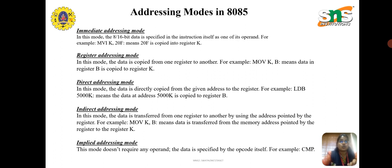In relative addressing mode, the operand is a memory location specified by the contents of the program counter plus a constant value. For example, MOV R0, #05H. In this mode, a jump instruction uses relative addressing by adding the contents of the program counter with the specified offset value to jump to the target label.